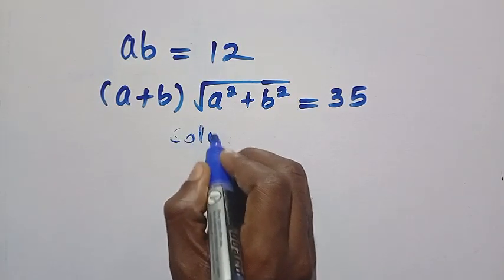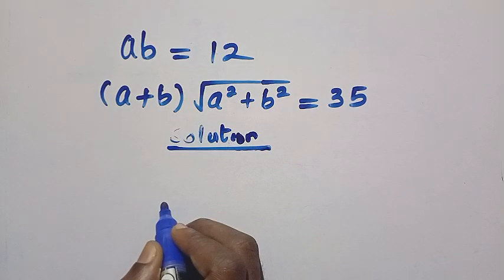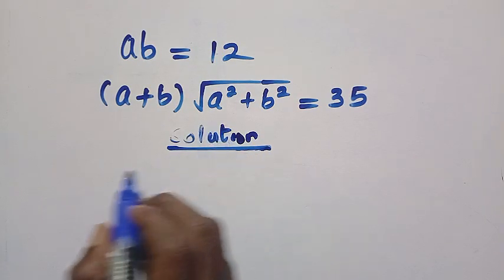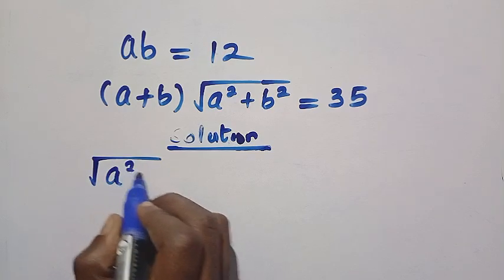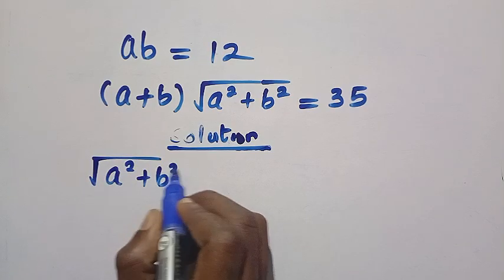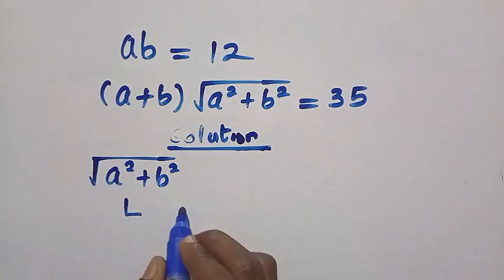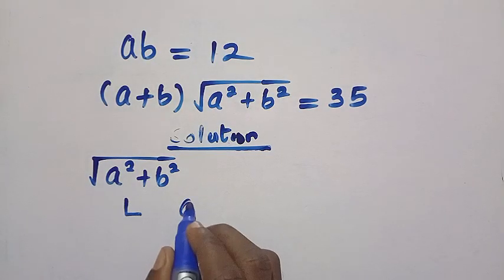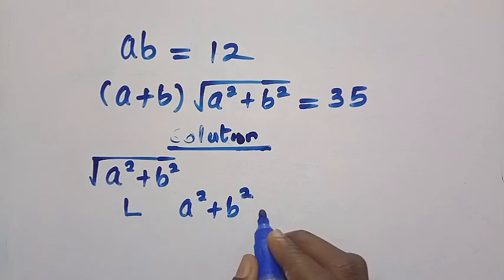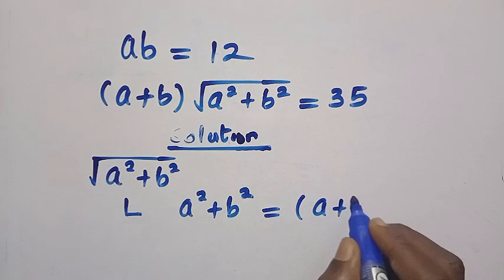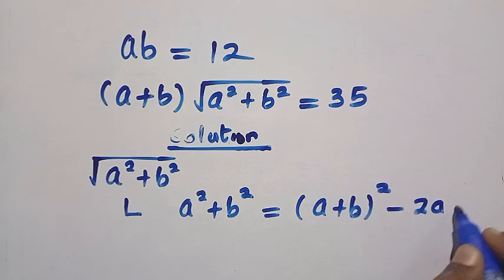I will start with the solution. I recall from the second equation, which is A squared plus B squared. When we expand this, A squared plus B squared gives us A plus B squared minus 2AB.